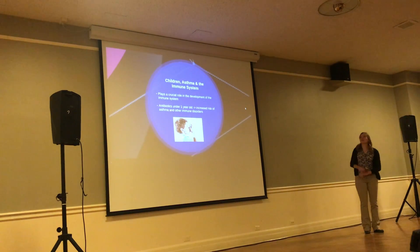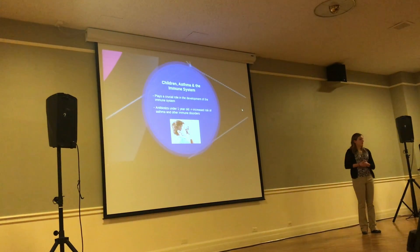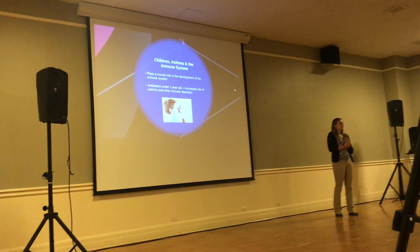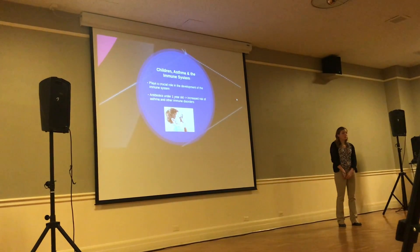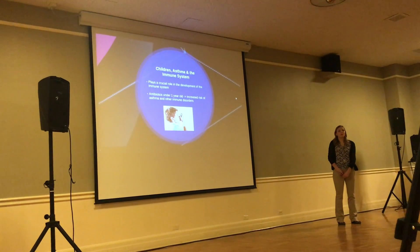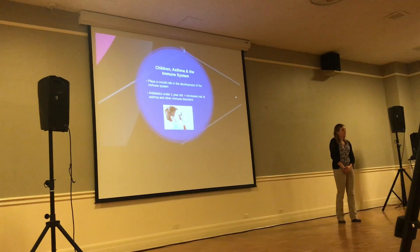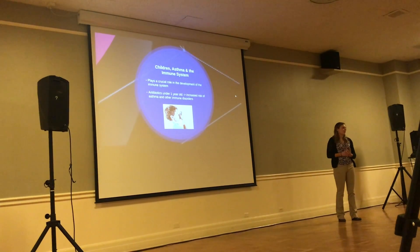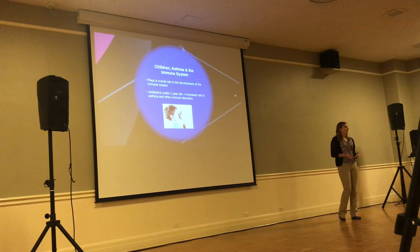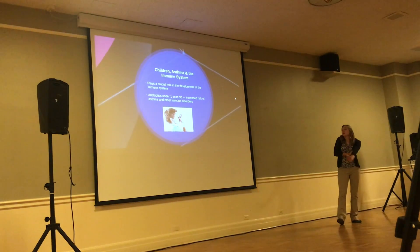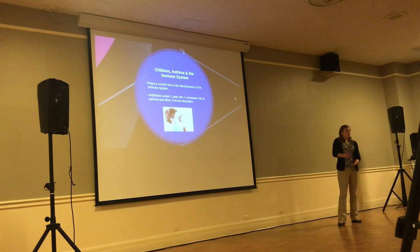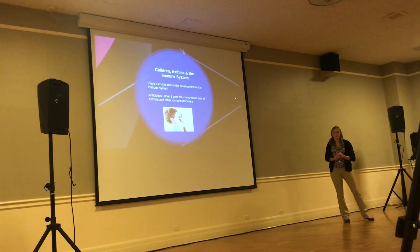The gut microbiome is essential for immune system development. Children given antibiotics under the age of one are much more likely to develop asthma and other immune disorders later in life, because their immune system hasn't fully developed yet. By giving them antibiotics, you wipe out the microbiome and disrupt that development, leading to issues like asthma and other immune system disorders.